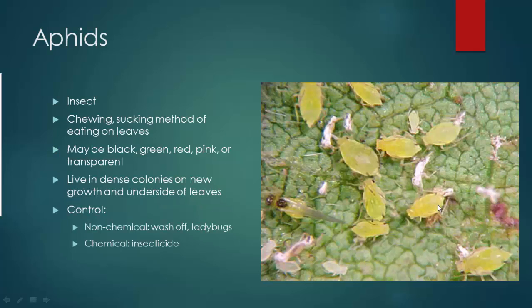First up we have aphids. Aphids are a big problem in a greenhouse. If you are growing peppers from seeds in a greenhouse, more than likely you will get aphids eventually. Aphids are chewing on plant leaves, so they're very harmful if they get into your crops. If you've got vegetables, you're going to have aphids.